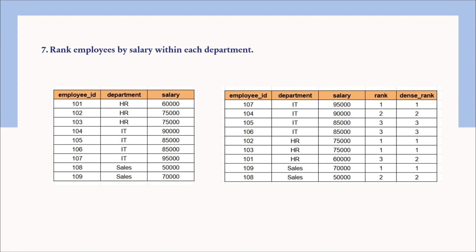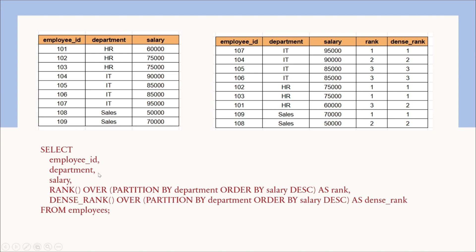For the solution, apply RANK or DENSE_RANK with PARTITION BY department_id and ORDER BY salary DESC to rank employees with the highest salary first. One important note: if the interviewer asks for the second or third highest salary within each department, wrap this query in a CTE and apply a simple WHERE condition filtering on the rank or dense_rank column to get the desired rank.